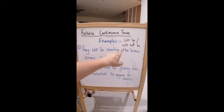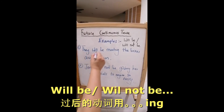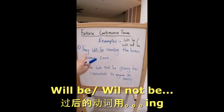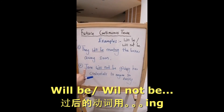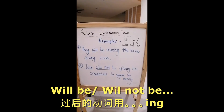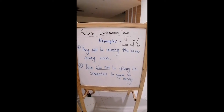Now we look at 'will be' and 'will not be'. After 'will be', the verb takes I-N-G. Example: 'They will be moving the boxes away soon.' 他们即将把那个 boxes 移开. Number two: 'Jane will not be giving her credentials to anyone so easily.' Jane 将不会轻易地把她的个人资料给任何人. Jane will not be giving her credentials to anyone so easily.